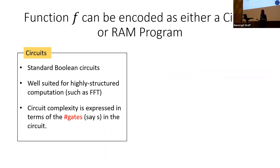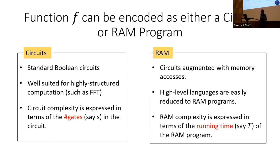The function f we want to securely compute can be expressed either as a RAM program or a circuit. Standard Boolean circuits are efficient for highly structured computations such as FFT, and circuit complexity is measured by the number of gates. RAM is essentially circuits with additional memory accesses, making it more expressive. High-level languages can be easily reduced to RAM programs, and RAM complexity is measured by the running time of the RAM program.